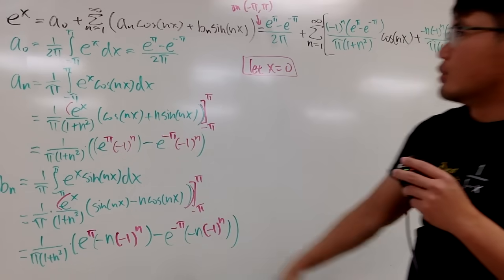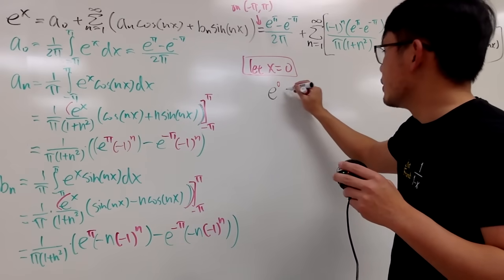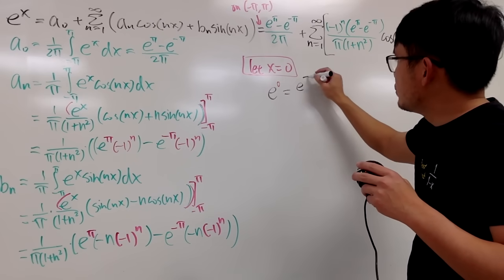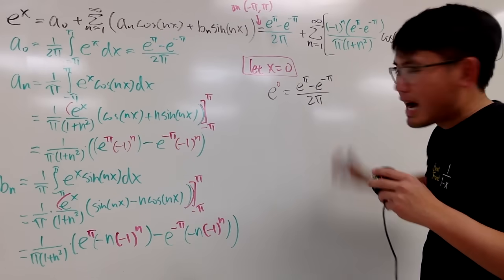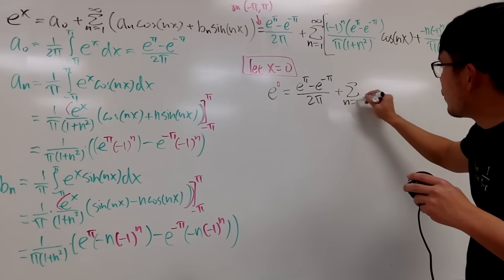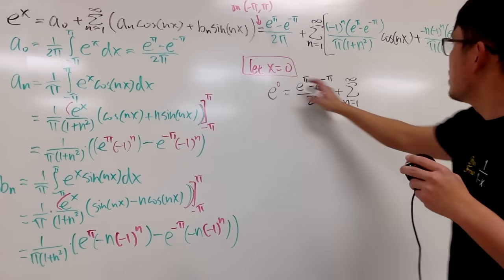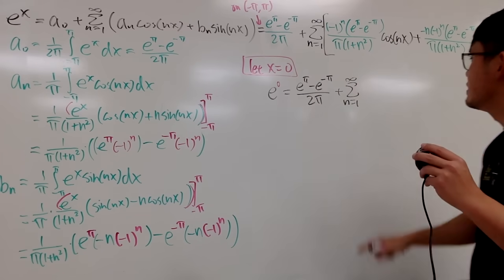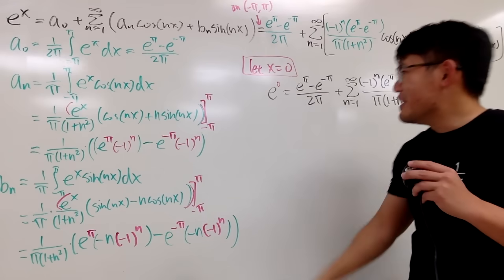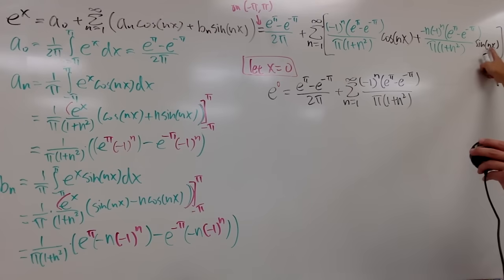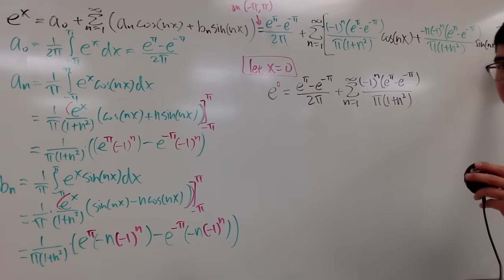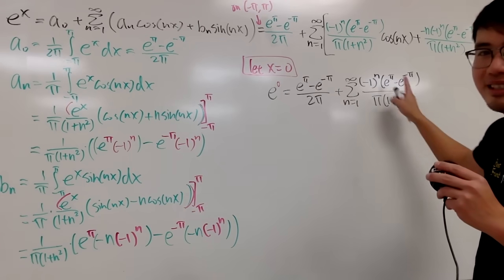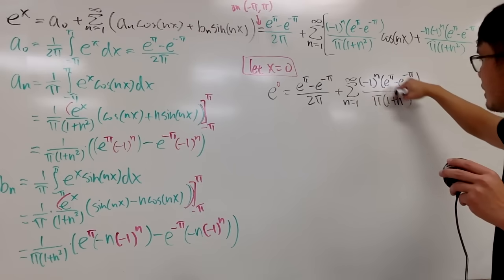Let x = 0: on the left-hand side we get e⁰ = 1. On the right-hand side, a₀ is still (e^π − e^(−π)) / 2π. In the summation, cos(n·0) = cos(0) = 1, so the cosine terms remain. But sin(n·0) = sin(0) = 0, so all the sine terms vanish. We're left with just the cosine part.